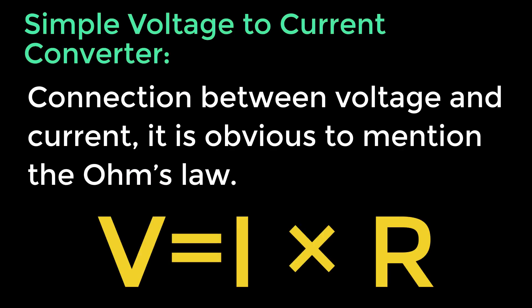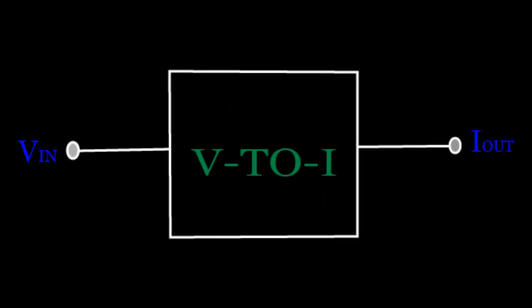Simple voltage to current converter. When we consider the connection between voltage and current, it is obvious to mention Ohm's law: V equals I times R. When we supply a voltage as input to a circuit which comprises a resistor, the proportional current will commence to flow through it.